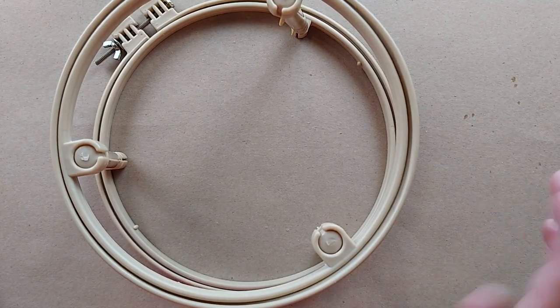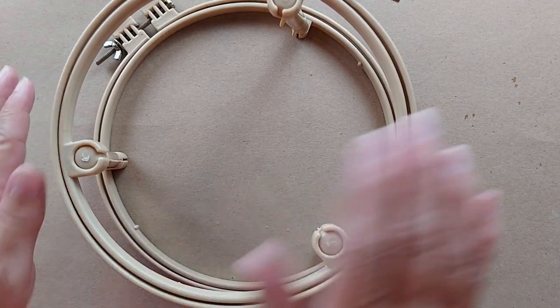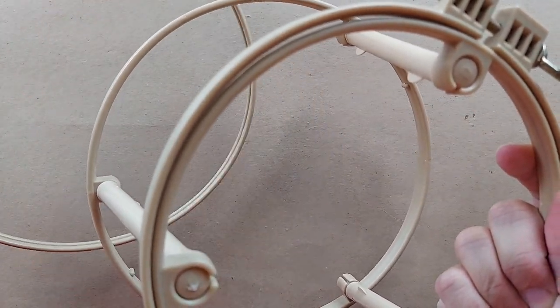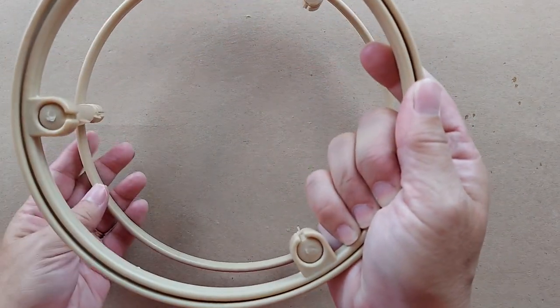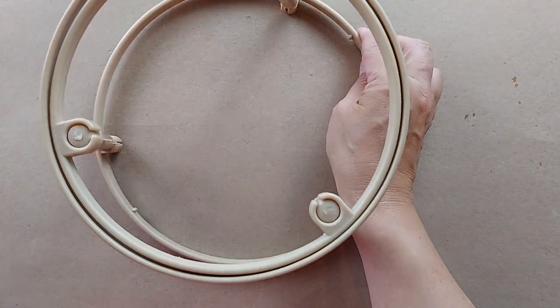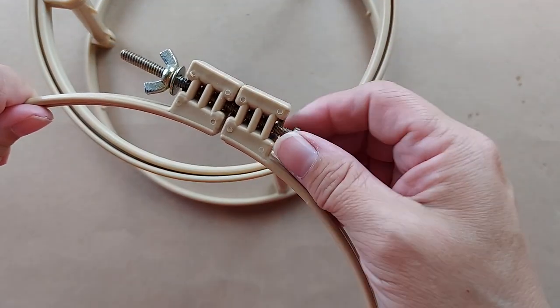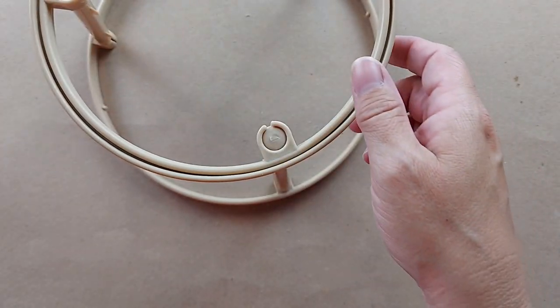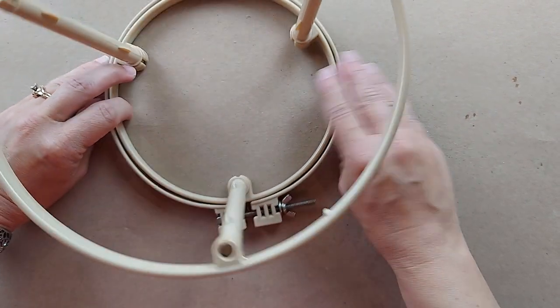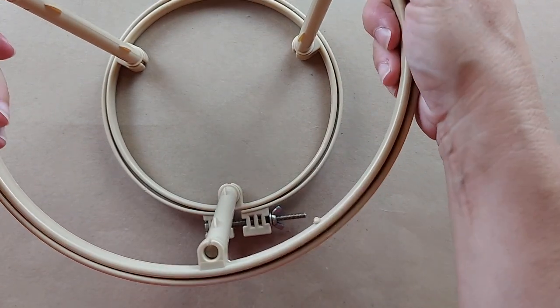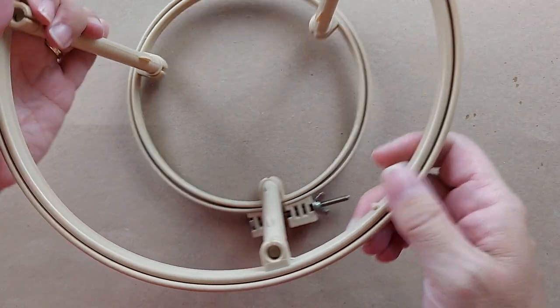When I'm using the lap stand, if I'm using the smaller side, I will take this larger part off and just set it aside. That makes it easier to have this in my lap so I don't get the screw poked into my leg. Vice versa, if I'm using the larger side of the lap stand, I will just take this bottom off and set it aside while I am using the top part.